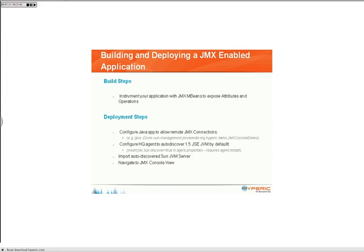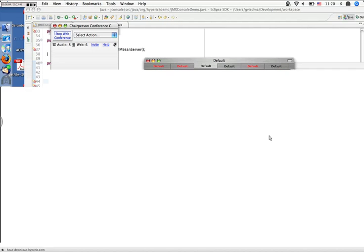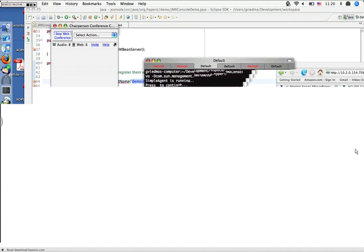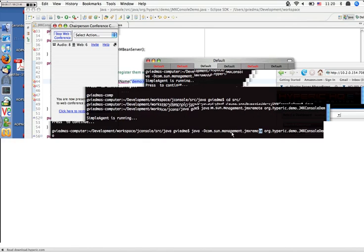That's the first build step: going through your application, identifying your use cases, and deciding what operations and attributes you want to expose to JMX. Once your application is built, you have to go through the task of actually deploying it. Deploying your application so you can access the JMX interface involves setting one Java parameter on the command line: com.sun.management.jmx.remote. That enables your application to allow remote JMX-based connections to your JVM. I will show you how I'm doing that locally, running this application in Eclipse with the JMX remote system variable specified, so the simple agent is running.